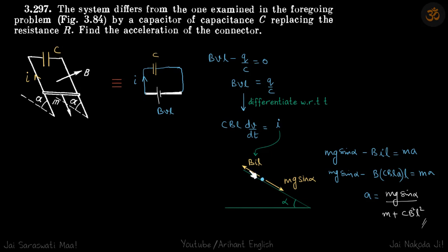Now if you look from this side the two forces on the rod parallel to the plane are Mg sin alpha downwards and BIL upwards. So net acceleration downwards will be Mg sin alpha minus BIL which is equal to MA.